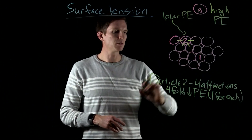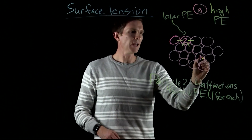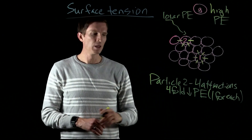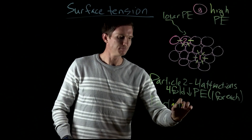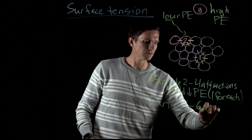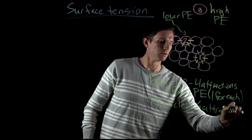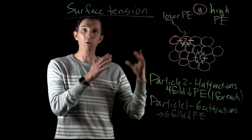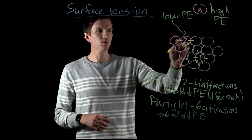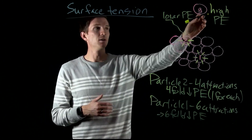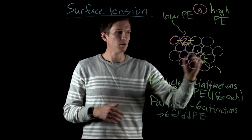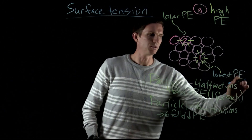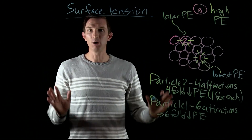Now thinking about particle number one: it not only has the four attractions like particle two, but it also has two additional ones. So molecule one has six attractions total, meaning it has a sixfold drop in potential energy relative to our gas particle. Molecule two has lower potential energy than the gas particle, and molecule one — in the bulk — has the lowest potential energy of all.